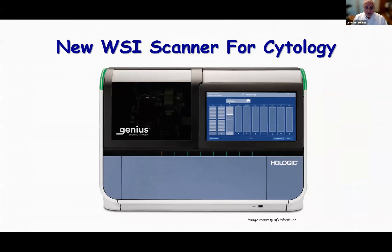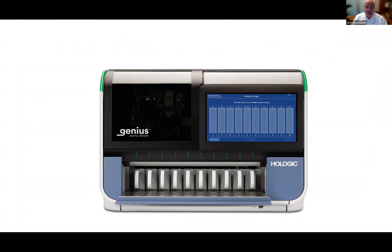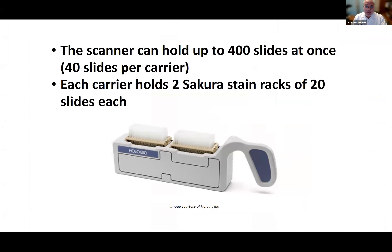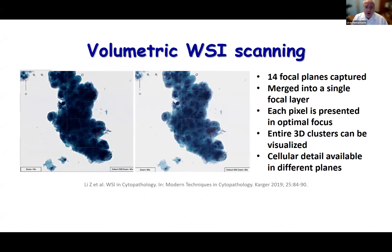For those who haven't seen this new scanner, it's called the Genius scanner from Hologic. When you open it, it can accommodate 400 slides; each carrier holds 40 slides and takes two SurePath stain racks of 20 slides each. It does continuous loading, so you can take slides off while others are scanning. This seems like a practical solution even for high-volume labs — you can scan 400 Pap test slides per batch.